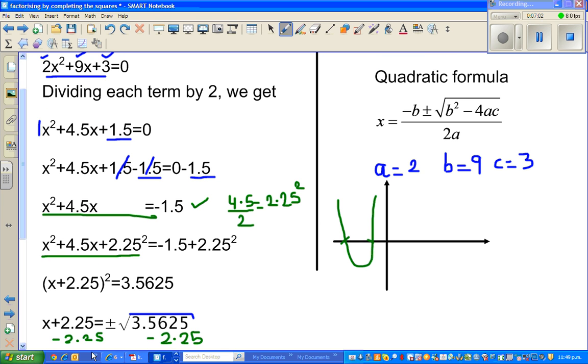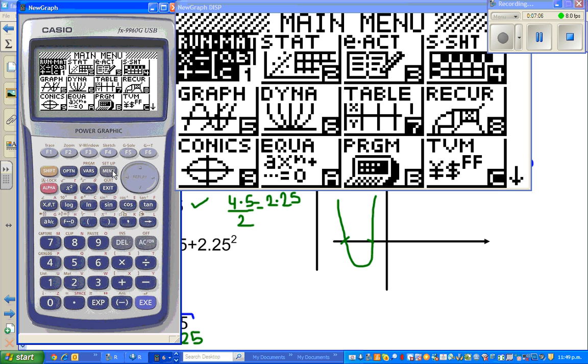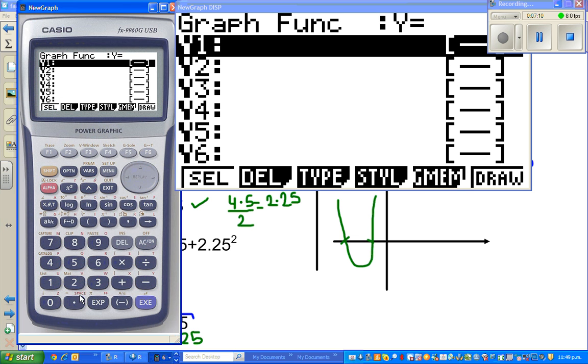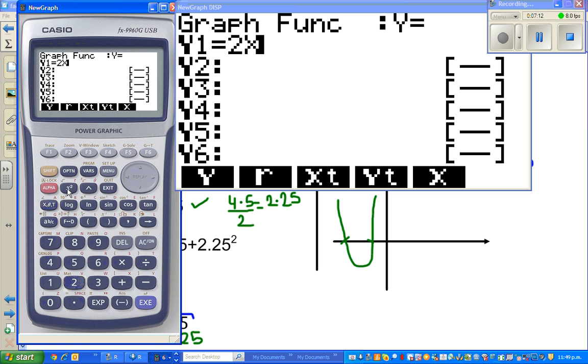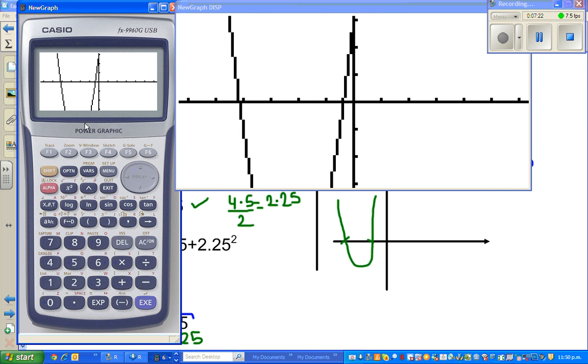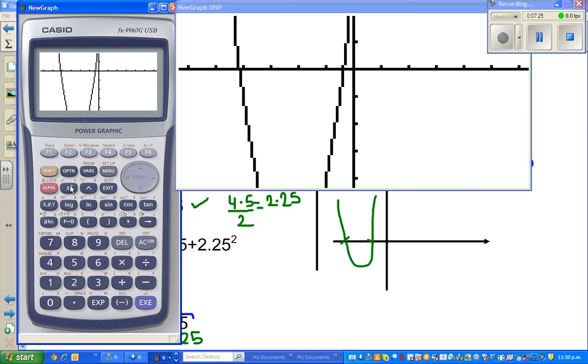How can we do this on a calculator? Go to menu, go to your graph menu, and type in 2x² + 9x + 3, just like that, and then draw it.